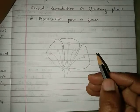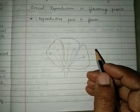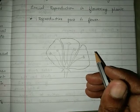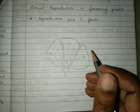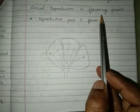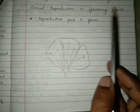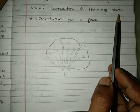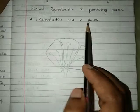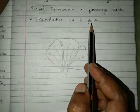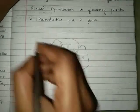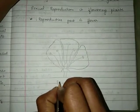So far we have seen the general characteristics of sexual reproduction. Now we will see sexual reproduction happening in plants — that is the flowering plants. The reproductive part of the plant is the flower, so first we will see the parts of a flower.